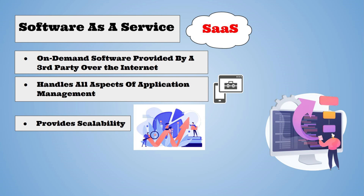This model essentially does all the hard work for you when it comes to software. A popular example of Software as a Service is Google Workspace. This cloud-based solution provides applications like Gmail, Google Docs, and Google Drive. These applications are all pre-configured and are ready to use.